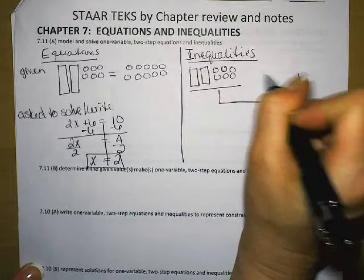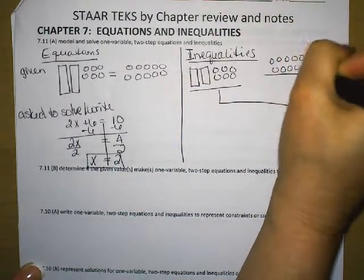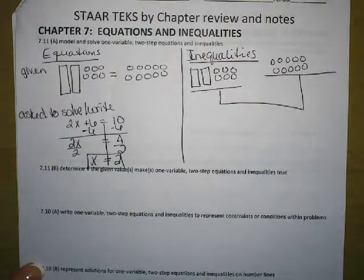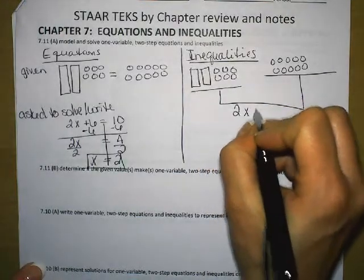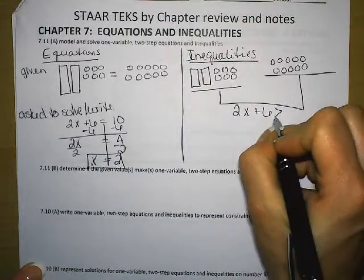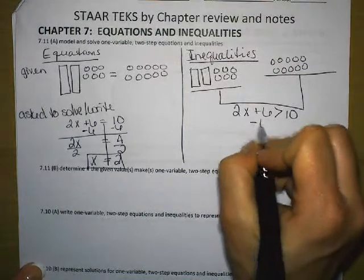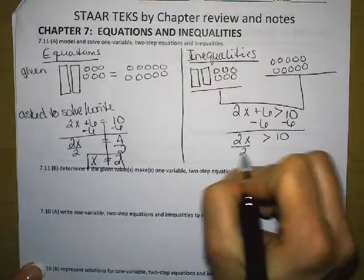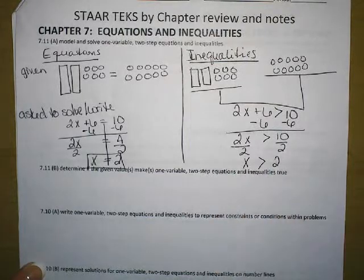You will notice that the heavier side is going to be greater because the heavier it is, the more weight is going to be on it. So it's going to be lower. So this equation would be 2x plus 6 is greater than 10. And you're going to solve it the same way. Subtract 6 from both sides. Divide by 2 from both sides. And x is greater than 2.